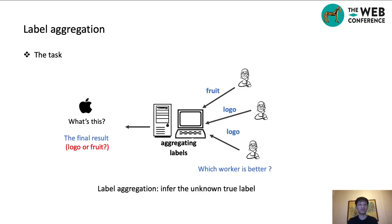I'd like to introduce label aggregation. Label aggregation is designed for inferring the unknown true label according to the redundant noisy labels provided by the workers. As shown in the figure for the app logo example, different workers will provide different answers and we don't know which answer is the correct label. So we need an algorithm to aggregate those labels and infer the final result for each instance.